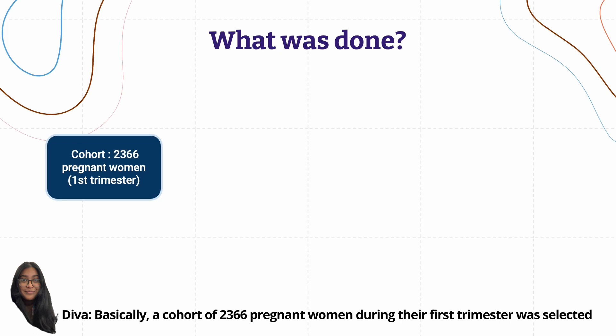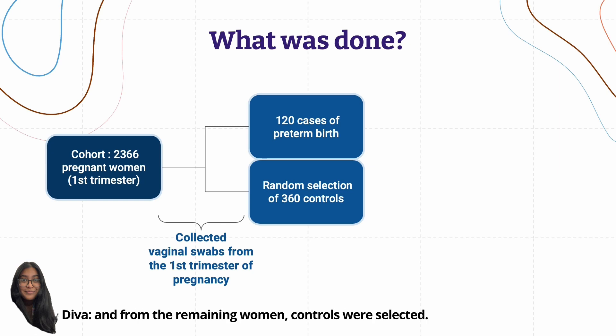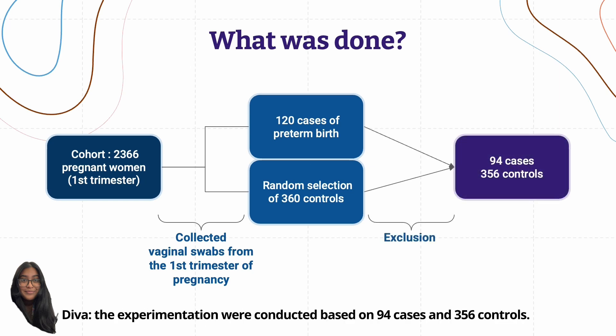A cohort of 2,366 pregnant women during their first trimester was selected and vaginal swabs were collected from them. From this cohort, 120 cases were preterm births and from the remaining women, controls were selected. Lastly, after some exclusion criteria, the experimentation was conducted based on 94 cases and 356 controls.